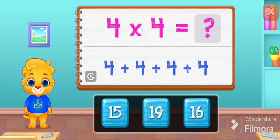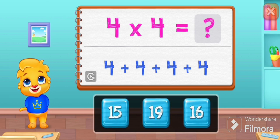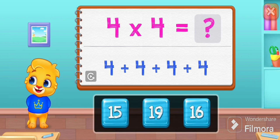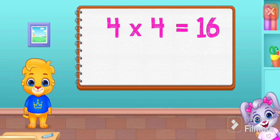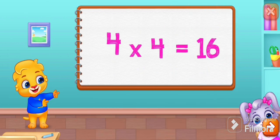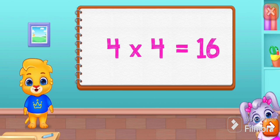Two times eight equals sixteen. Four times four equals four plus four plus four plus four. Sixteen! Four times four equals sixteen.